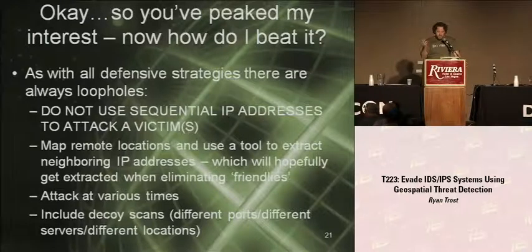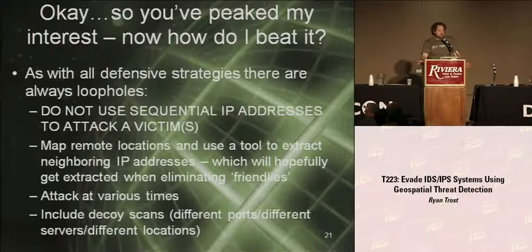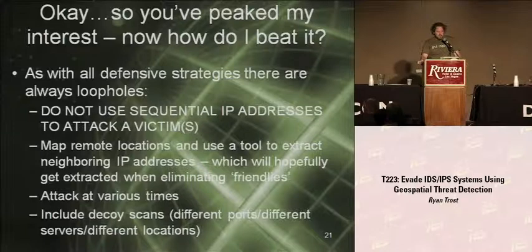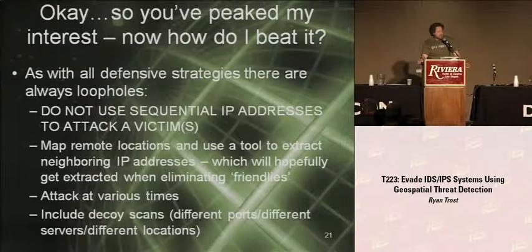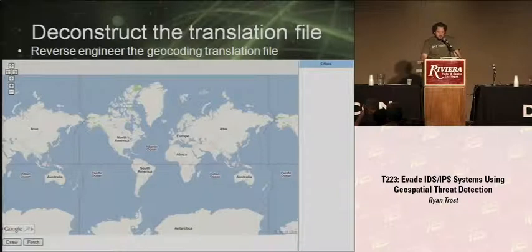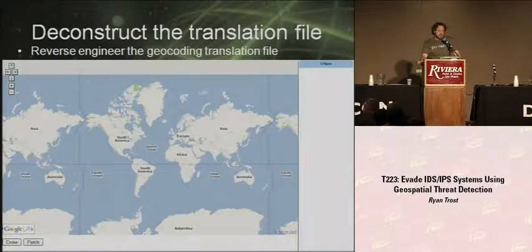So how to beat it. Hopefully you're thinking this has piqued your interest a little bit — now how can you actually beat it? Well, you take that translation file and you just reverse engineer it. Typically what they're doing is: you feed them an IP address and they feed you lat-long coordinates, zip codes, phone numbers, who the ISP is, what broadband they're using. Just reverse engineer it. I developed a product that basically sucks in the entire database of source IP to lat-long coordinates and deconstructs it, so I can give it lat-long coordinates and it'll give me all the IP addresses within those lat-long coordinates.